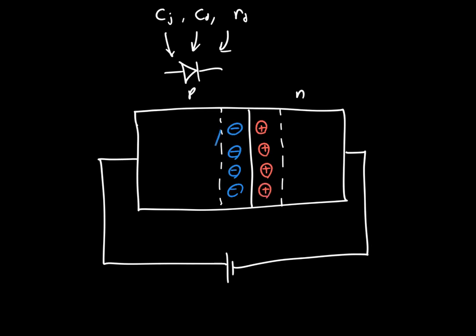And we also know that we've got some excess minority electrons on the P-side, and some excess minority holes on the N-side. And those fall off with distance eventually going to zero at the edge of the P-N junction.